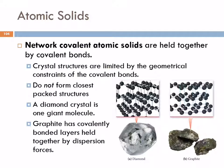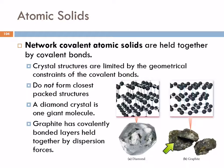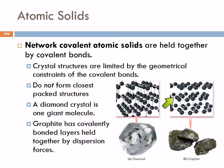Network covalent solids have individual atoms covalently bonded to each other. Carbon actually forms a couple of different types of network covalent solids: diamond and graphite. In a diamond, the covalent bonds occur in three dimensions. In graphite, we have two-dimensional layers, and between the layers are just dispersion forces. This is why graphite is slippery — the layers slide easily.